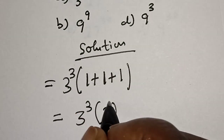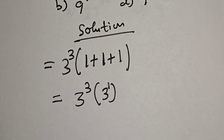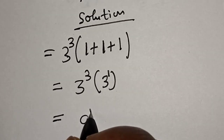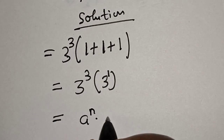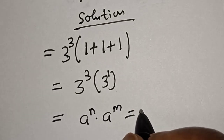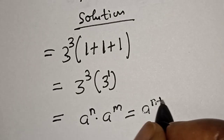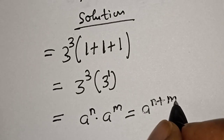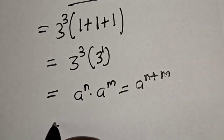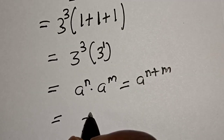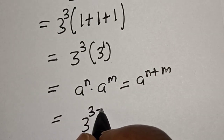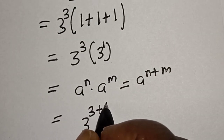Remember this rule: a raised to power n multiplied by a raised to power m equals a raised to power (n + m). Applying this rule, we get 3 raised to power 3 multiplied by 3 raised to power 1, which gives 3 raised to power (3 + 1).